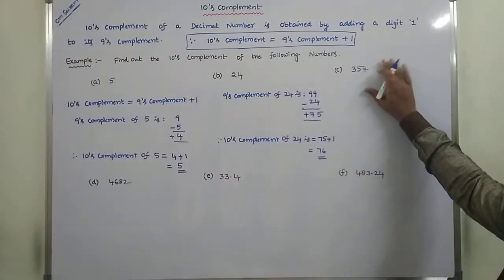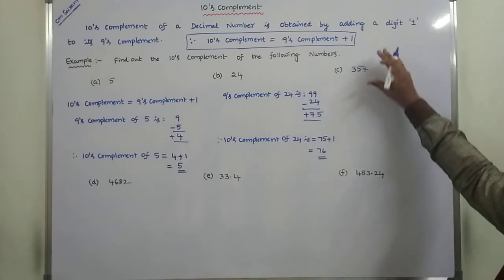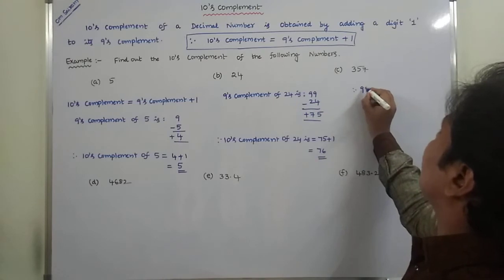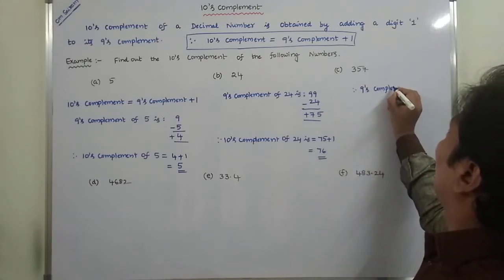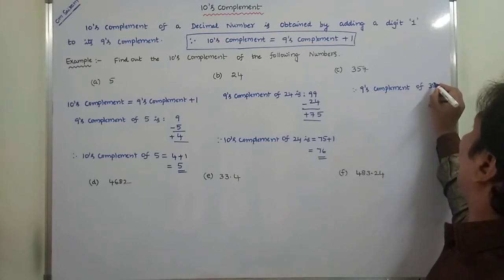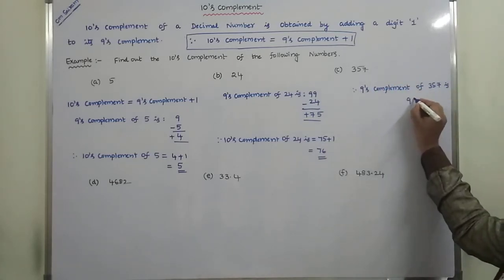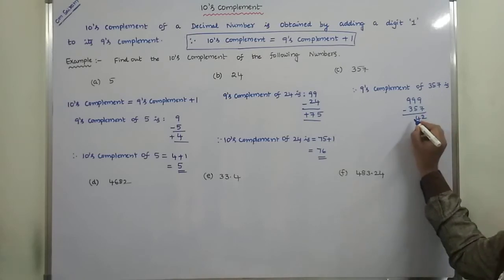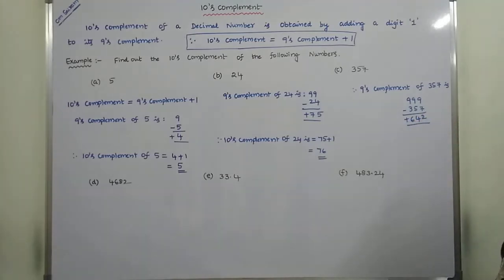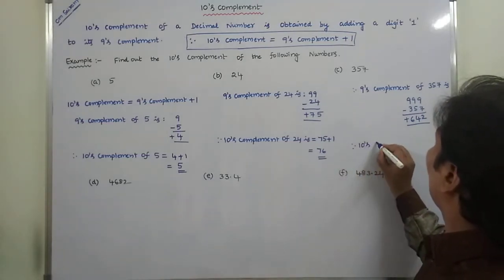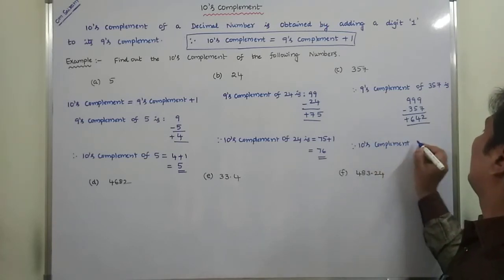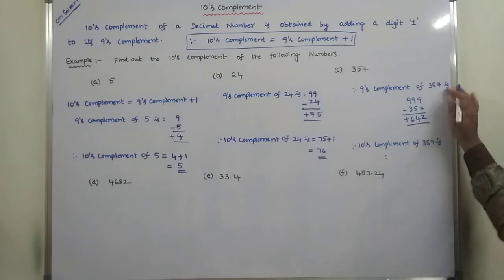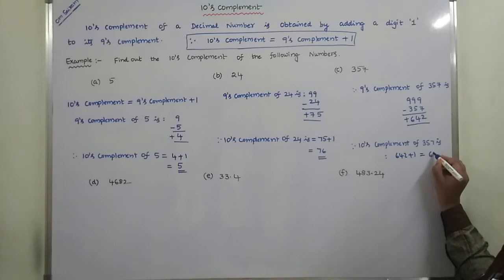Next, find out the 10's complement of 357. We find the 9's complement by subtracting each and every digit from 9 and then adding 1. There are 3 digits, so we take three 9s. 9 minus 7 is 2, 9 minus 5 is 4, 9 minus 3 is 6, giving 642. Therefore, the 10's complement of 357 is: 9's complement 642, plus 1, which equals 643.